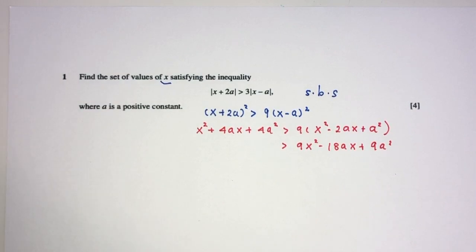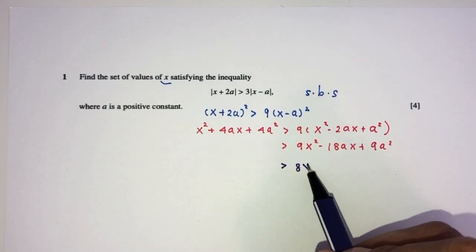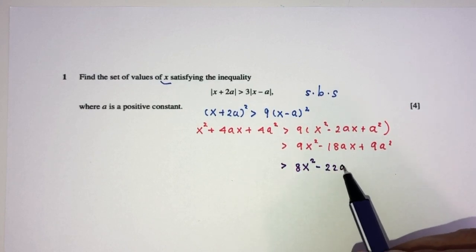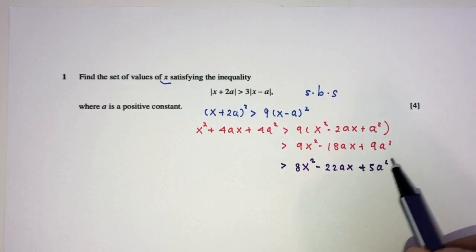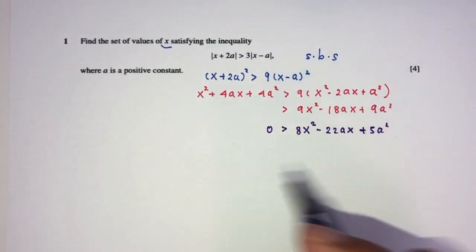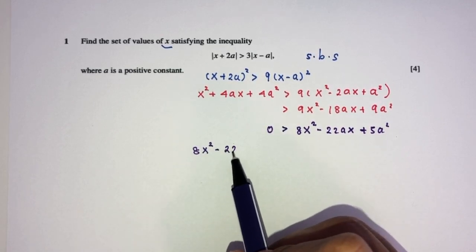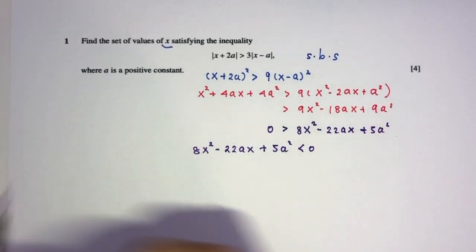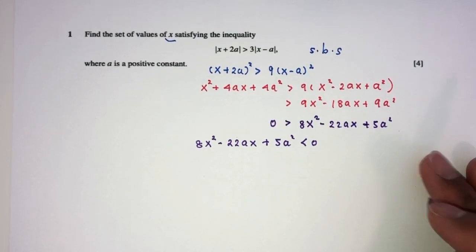Now, finally, we have to send everything to one side. Let's send this over here. You will have what? 9 minus 1 should be 8. And minus 18 minus 4 should be minus 22. Plus 9 minus 4 should be plus 5a². Now, obviously, we can rewrite this as this on this side less than 0. Now, because here we don't have an equal sign, as you can see, there's no need for that, let's proceed.